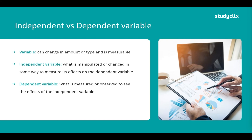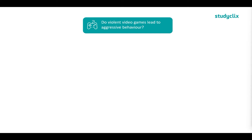Let's have a look at an example. Our research question is: do violent video games lead to aggressive behaviour? We can pretty much identify our independent and dependent variables just from looking at this question, without even needing to know the design of the experiment. Starting with our independent variable — what is being manipulated? We want to see what effect violent video games have on aggressive behaviour, so we're manipulating the use of violent video games.